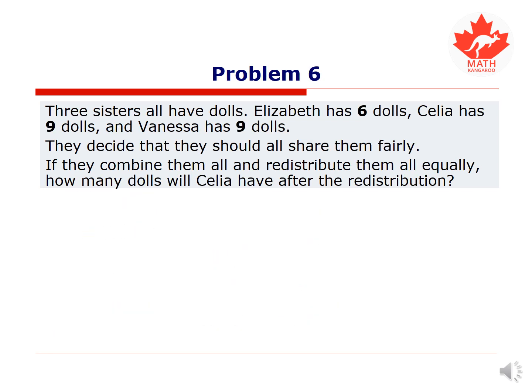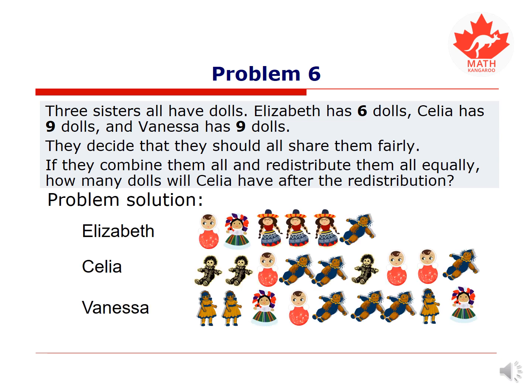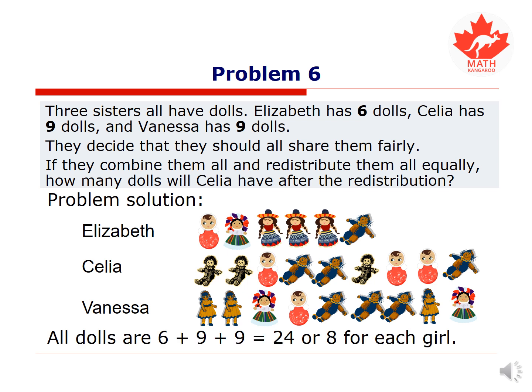Same problem with different numbers. If Elizabeth has 6 dolls, Celia 9, and Vanessa 9, how will redistribution take place? All dolls are 24, so each girl should have 8 dolls for a fair distribution. This can happen if Celia and Vanessa each give 1 doll to Elizabeth, so that all girls will have 8 dolls each.